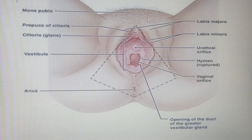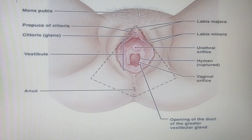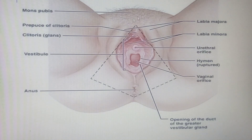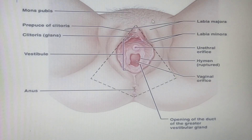This mons pubis forms the anterior part of the vulva. Because it is skin, there will also be sweat glands and sebaceous glands there, as we see when we look at the skin in detail. All these form parts of the mons pubis, mons venus, or mons veneris.